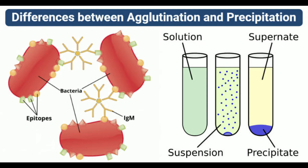The carrier can either be artificial, such as latex or charcoal particles, or biological, such as red blood cells. The agglutination process involving red blood cells is termed hemagglutination, and the process with white blood cells is termed leukoglutination.